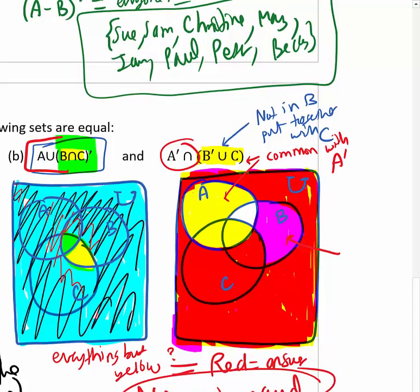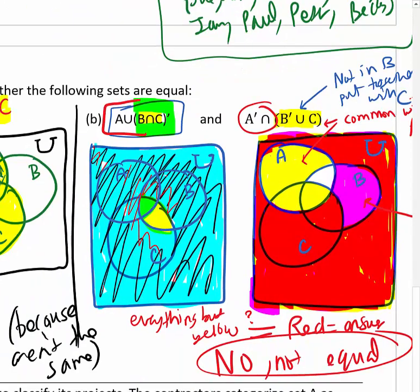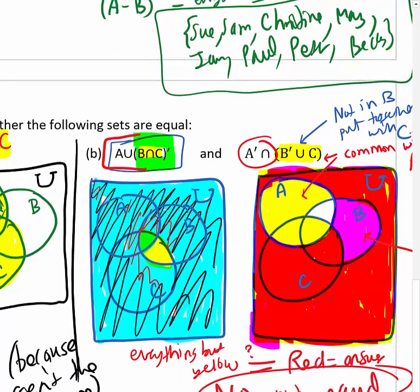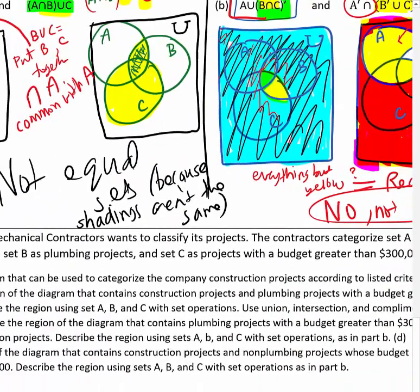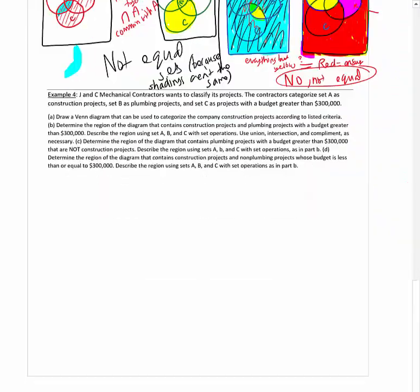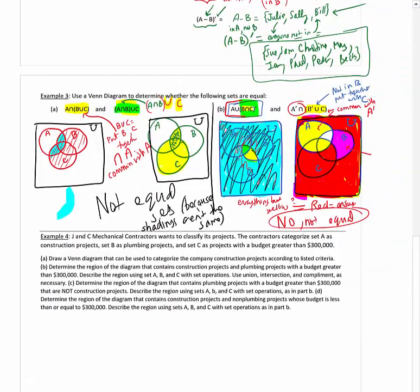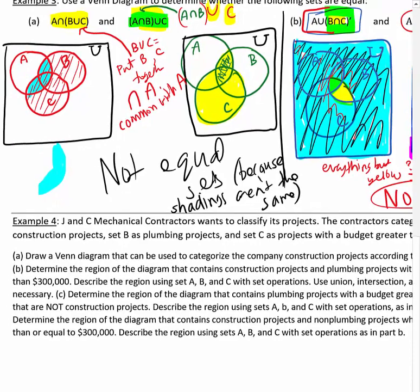These are kind of complicated, but it does help to go step by step — shade this, shade that, get the hang of it. This last example is a lot of words, so let's take it carefully.